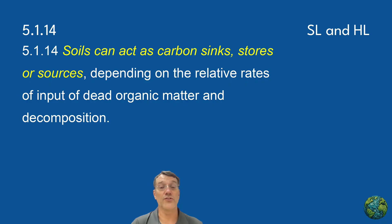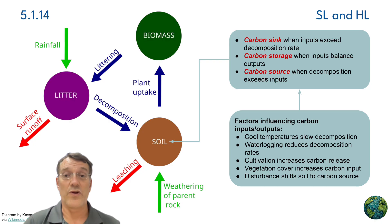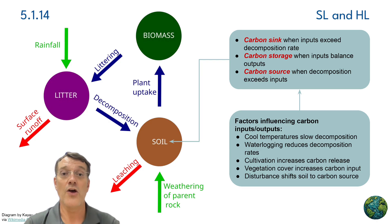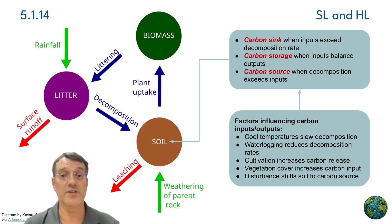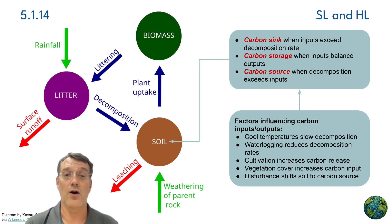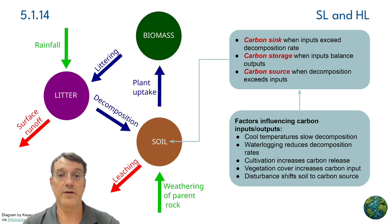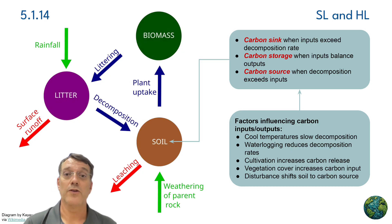Soils can act as carbon sinks, carbon stores, or carbon sources, depending on the relative rates of input of dead organic matter and decomposition. When organic matter inputs exceed decomposition rates, soils act as carbon sinks, removing carbon dioxide from the atmosphere. When inputs are balanced with outputs, soils act as carbon stores in a state of dynamic equilibrium. If decomposition is greater than carbon inputs, soils become carbon sources, releasing carbon into the atmosphere via respiration. Factors like cool temperatures and waterlogging slow down decomposition rates, while cultivation and disturbance often increase the release of carbon. The more vegetation there is within and above a soil, the greater the carbon input; when people disturb soils through farming and other human activities, soils can shift to being a carbon source.